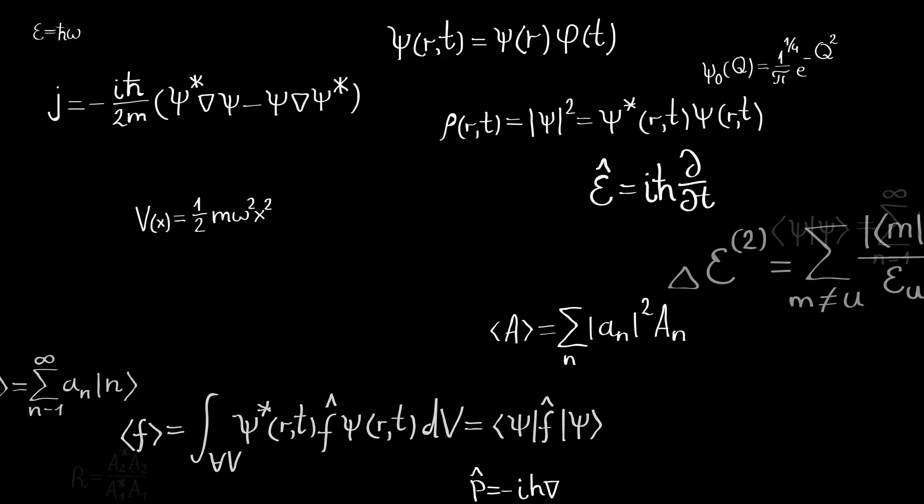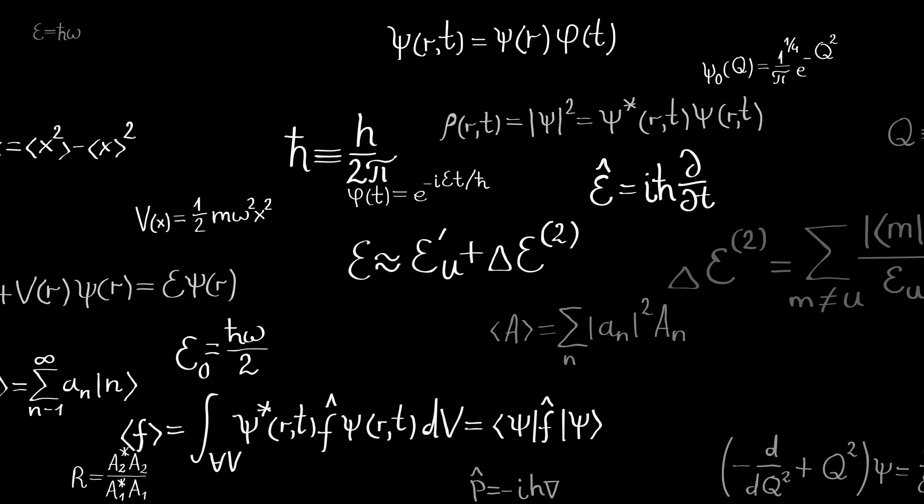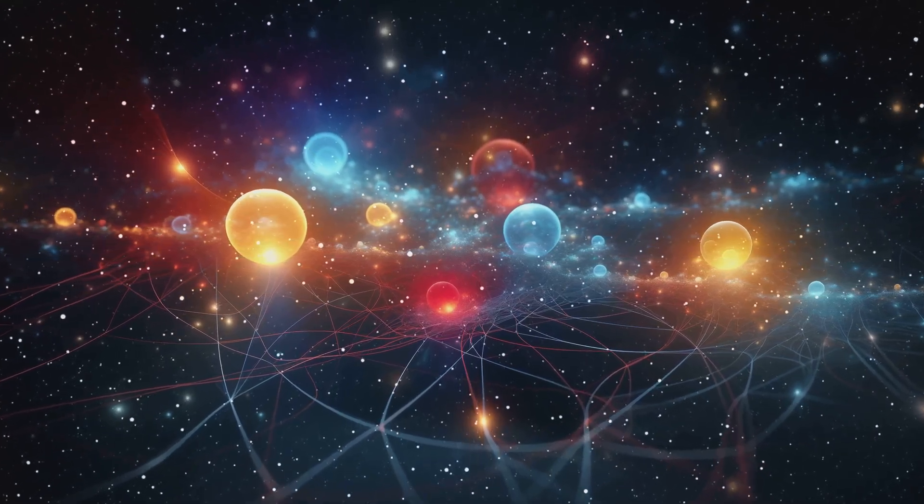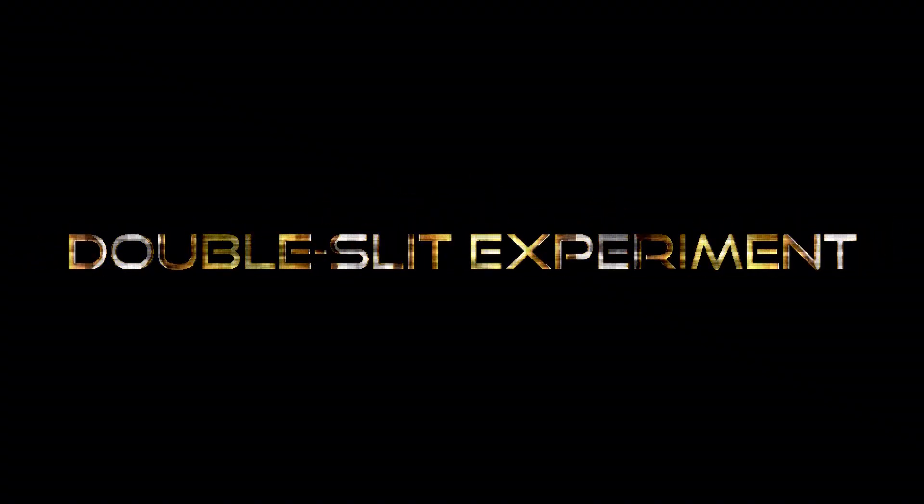First up, wave-particle duality. Imagine light is a superhero with a dual identity. Sometimes it's a wave, spreading out, bending around corners and creating patterns. Other times it's a particle, bouncing off surfaces and traveling in straight lines.